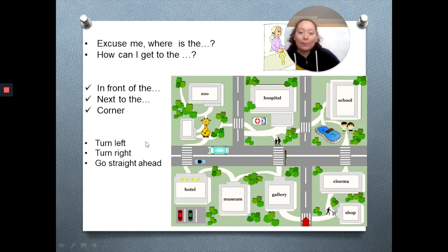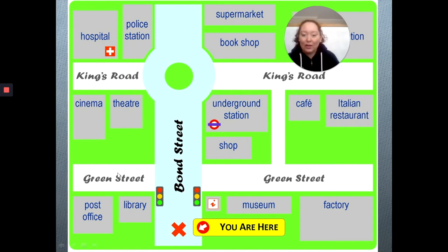Vamos a ver otro ejemplo. Y aquí tenemos una ciudad más grande. You are here. Ustedes están acá. Y ustedes me preguntan a mí, Miss, how can I get to the factory? Veamos dónde estará el factory. Factory is here. I will tell you, in the corner, turn right. Girar a la derecha. Next to the museum is the factory. Ven qué fácil?